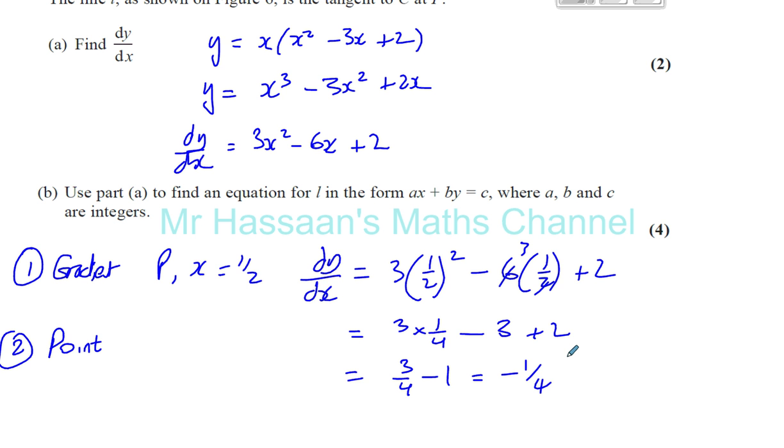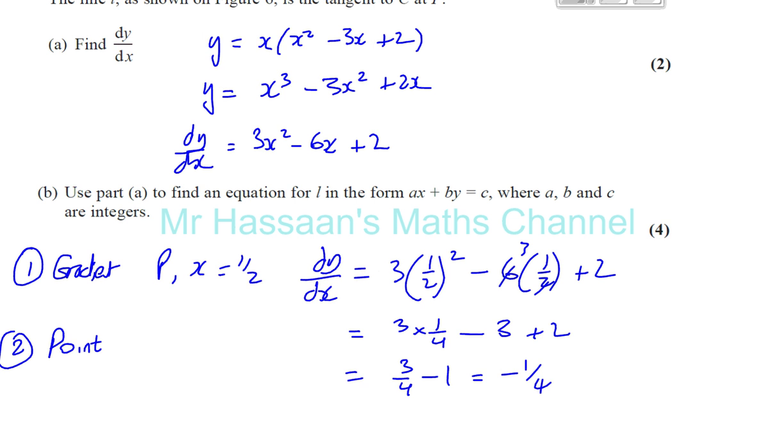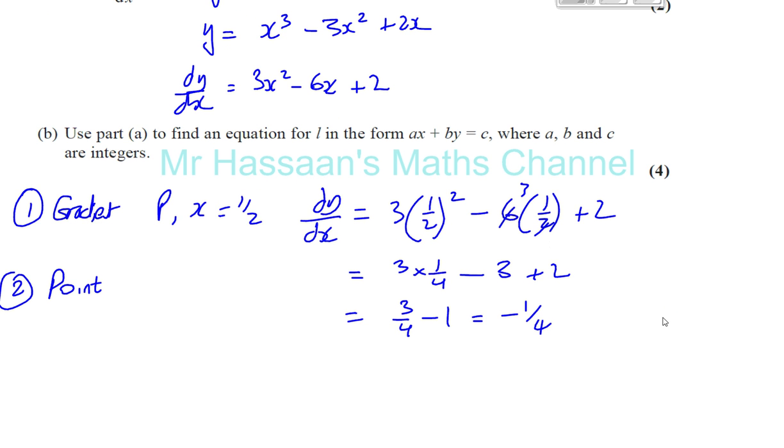We can just confirm that we haven't made a silly mistake by using our calculator. 3 times, in brackets, 1 divided by 2 squared, minus 6 times a half, which we know is 3, plus 2. That gives you negative a quarter as we found. So we found the gradient. The gradient of the line is negative a quarter.